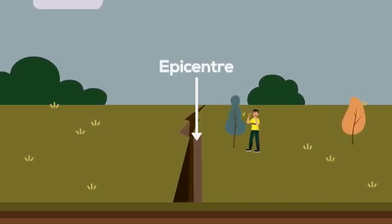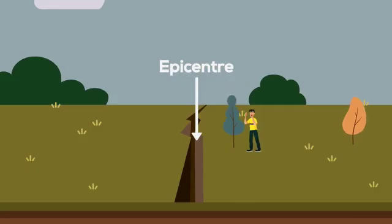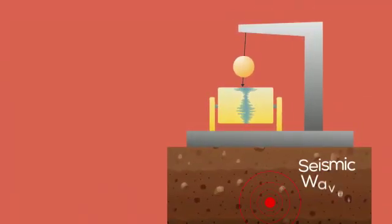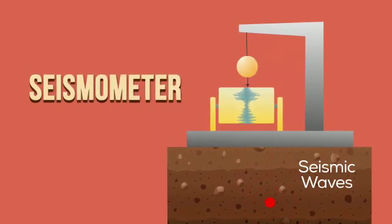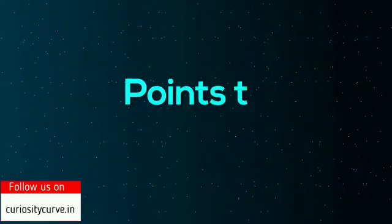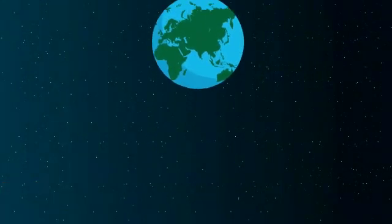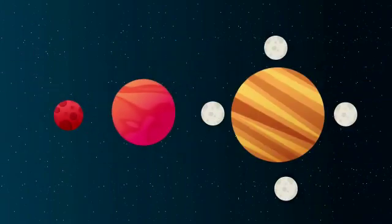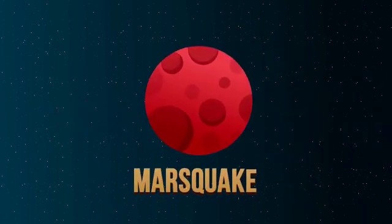There is a device which is used to measure these seismic waves called seismometer. Apart from earth, earthquakes also happen on Mars, Venus, and several moons of Jupiter too. Earthquake on Mars is called marsquake.